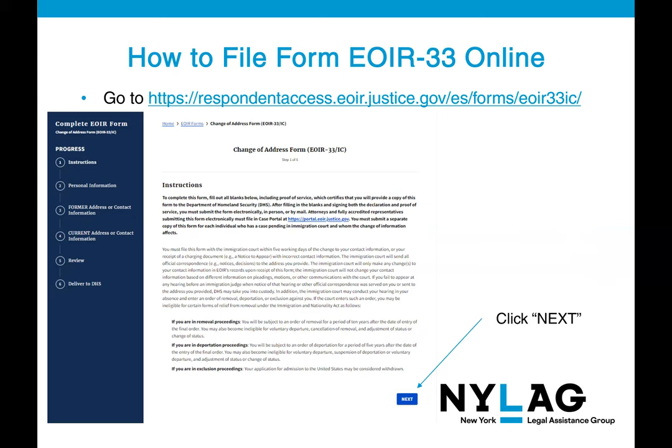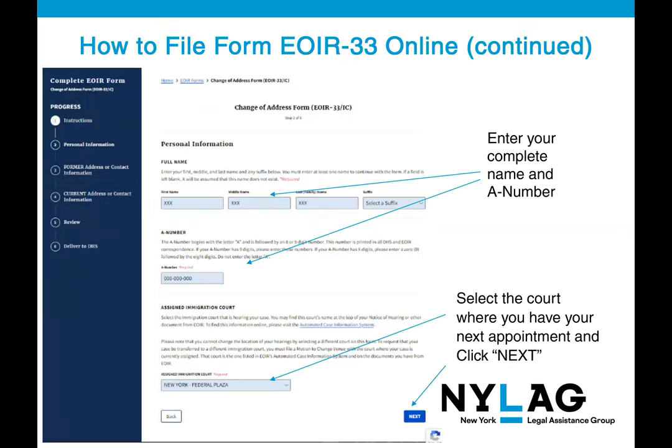Now we'll talk about how to complete form EOIR-33 over the internet. You can do it online by visiting the EOIR website. Below is a screenshot of the initial page you will see. After reading the instructions, click the Next button. That will take you to a page where you fill out your complete name and A number, and select the court where you have your next appointment, then click the blue Next button.